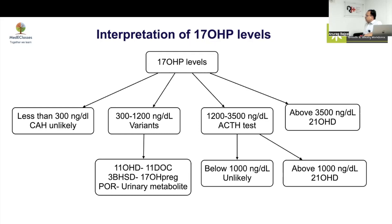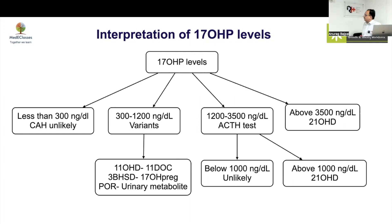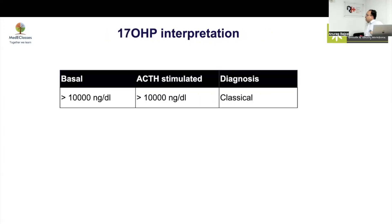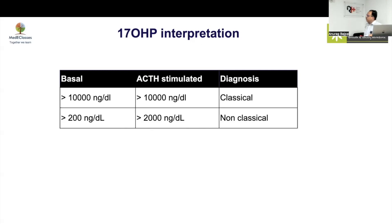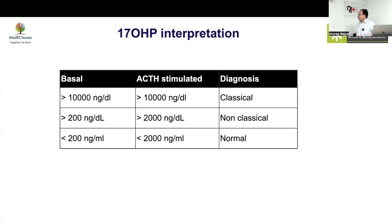A baseline level above 3500 ng/dL (35 ng/mL) is pretty much suggestive of classical CAH. After ACTH stimulation, if the level goes above 10,000 ng/dL it is definitely classical form; above 1000 ng/dL suggests non-classical form. In classical salt-wasting CAH, cortisol levels will be hugely elevated — you may get levels above 100. Non-classical levels will not be as high. A basal level less than 2 and stimulated less than 20 ng/mL is most likely normal.